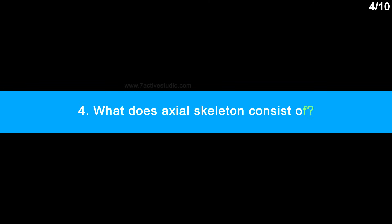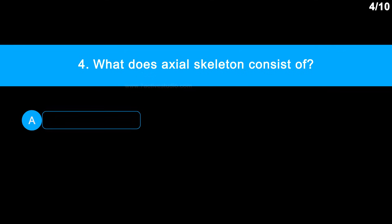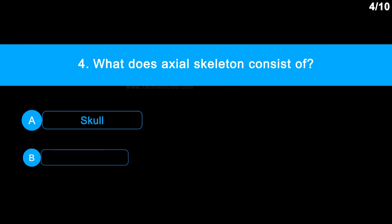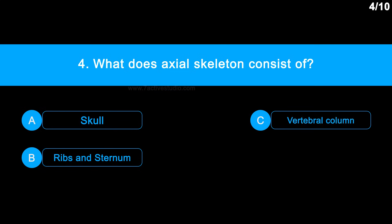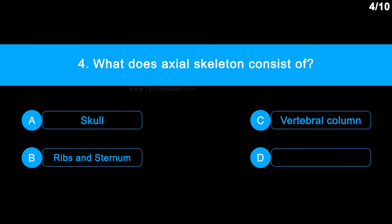Question 4: What does the axial skeleton consist of? Option A: skull. Option B: ribs and sternum. Option C: vertebral column. Option D: all the options.